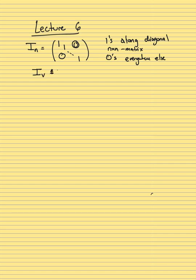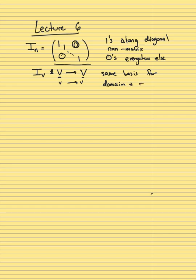This goes from V to V and it just takes any vector and outputs the same vector. This matrix on itself doesn't correspond to any particular vector space or choice of basis, but whenever you have a vector space and you choose a basis — the same basis chosen for the domain and the range — then the identity map gets written as this matrix.